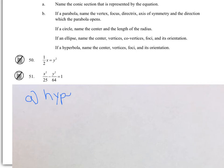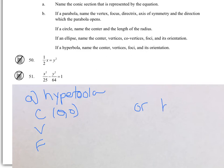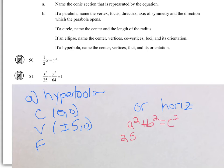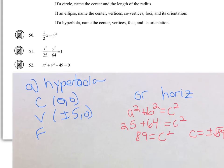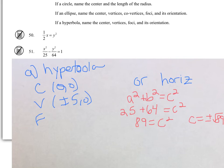Problem 51 is a hyperbola — I know that because of the subtraction between the terms. The center is at (0, 0). It opens horizontally in the X direction because the X variable is positive. The vertices are at plus or minus 5, 0. For the foci, A squared plus B squared equals C squared: 25 plus 64 equals 89, so C equals plus or minus root 89. The foci are in the same direction as the vertices, giving coordinates (plus or minus root 89, 0).